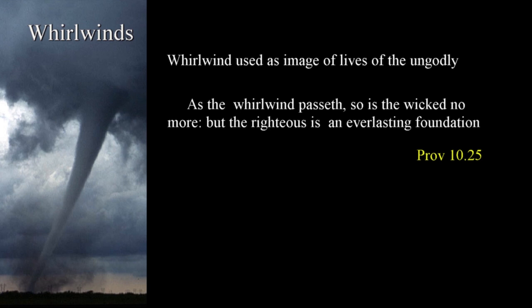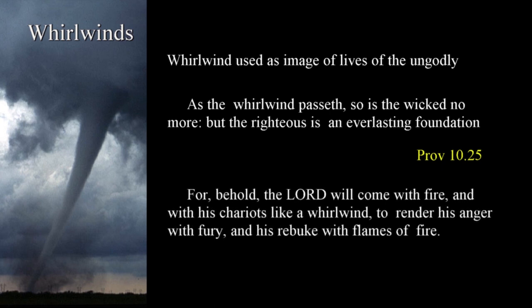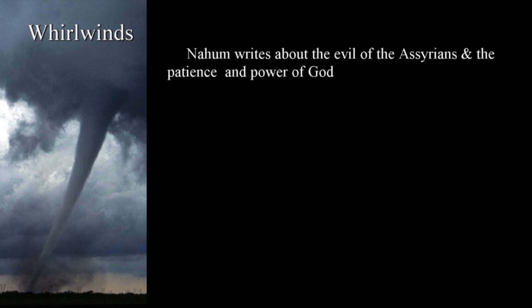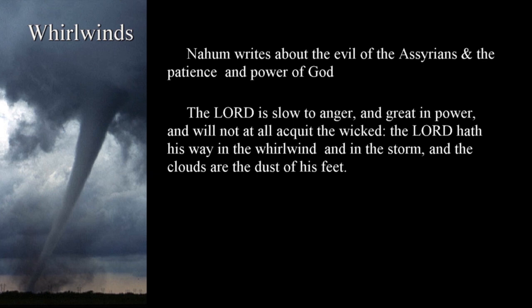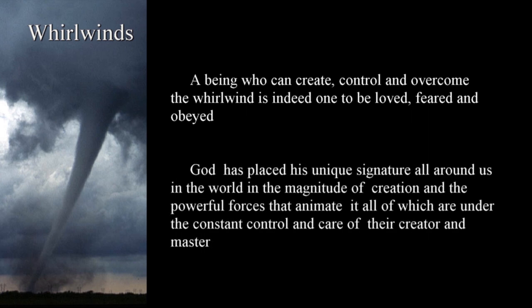The power of God's judgment is described in a fashion that should cause dread to rise in the hearts of those who don't obey: 'Behold, the Lord will come with fire, and with his chariots like a whirlwind, to render his anger with fury and his rebuke with flames of fire' — Isaiah 66:15. The prophet Nahum wrote concerning the evil of the Assyrians as well as the patience and power of God: 'The Lord is slow to anger, and great in power, and will not at all acquit the wicked. The Lord hath his way in the whirlwind, and in the storm, and the clouds are the dust of his feet' — Nahum 1:3. A being who can create, control, and overcome the whirlwind is indeed one to be loved, feared, and obeyed. God has placed his unique signature all around us in the world in the magnitude of creation, and the powerful forces that animate it, all of which are under the constant control and care of their creator and master.